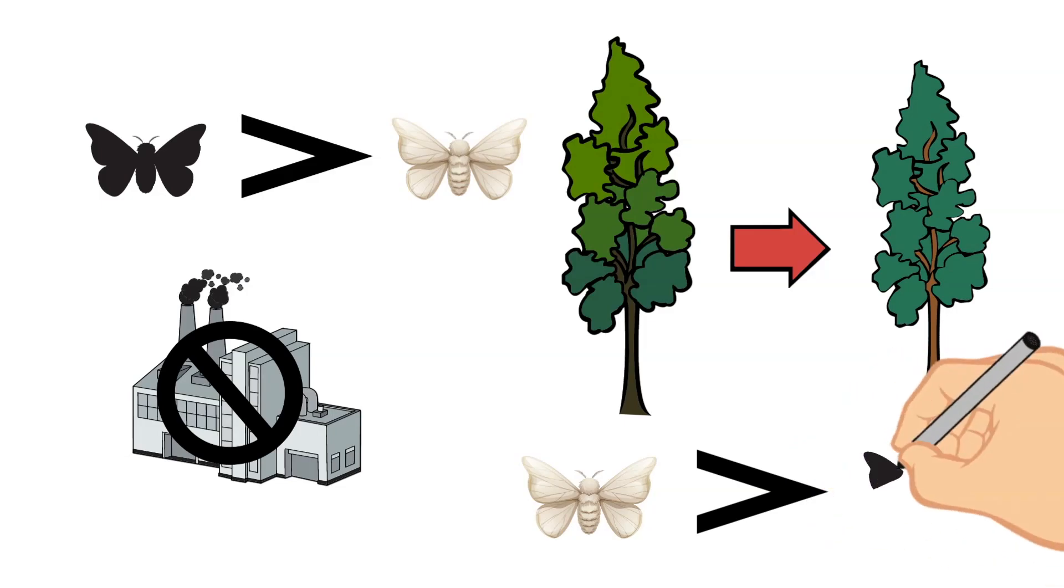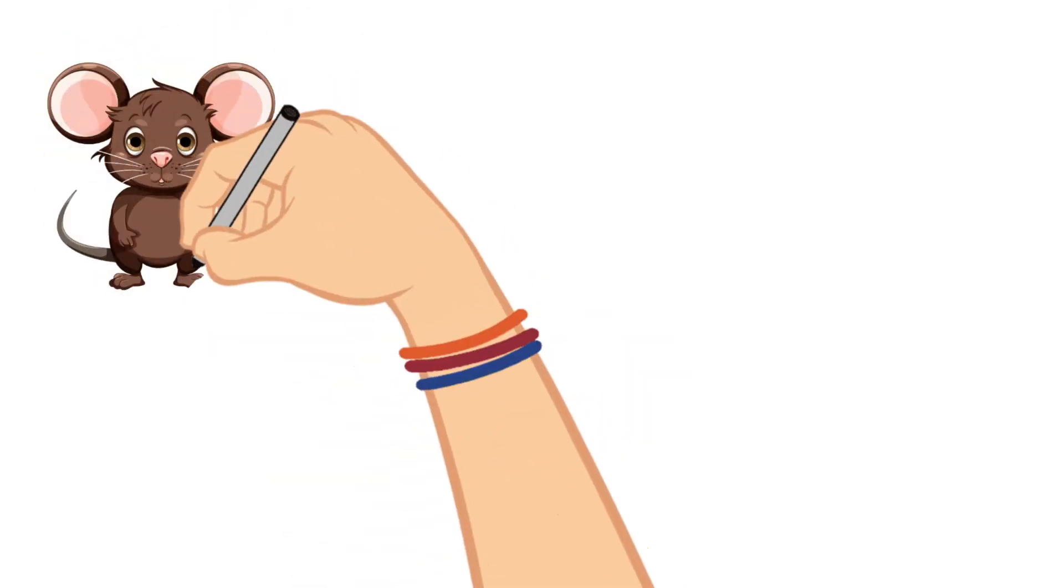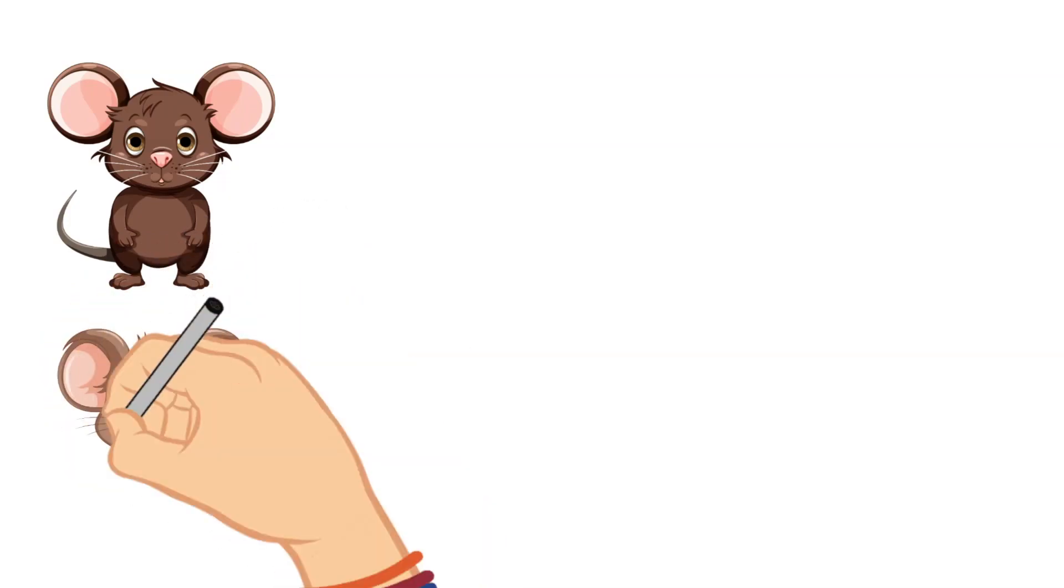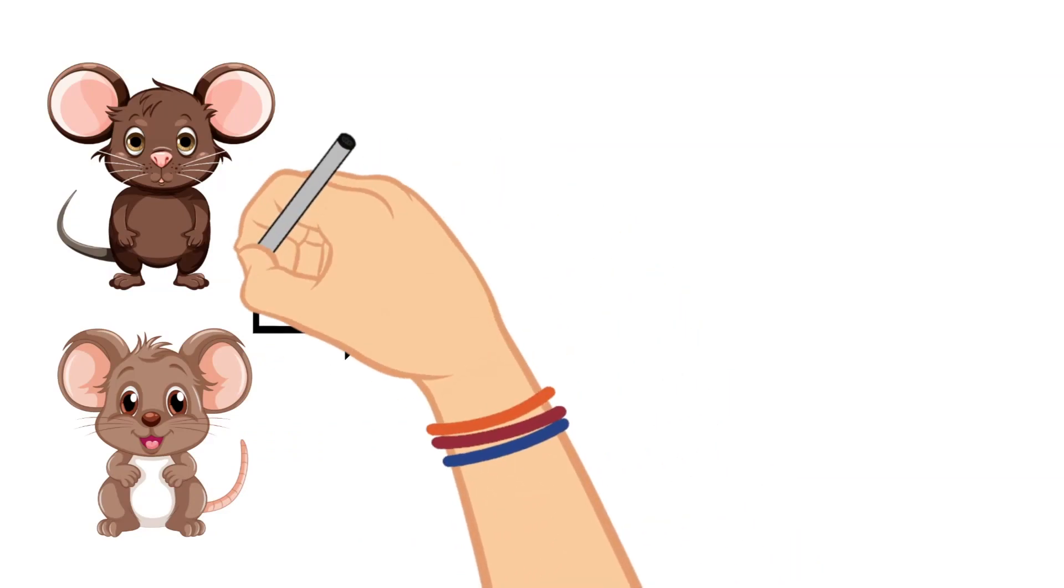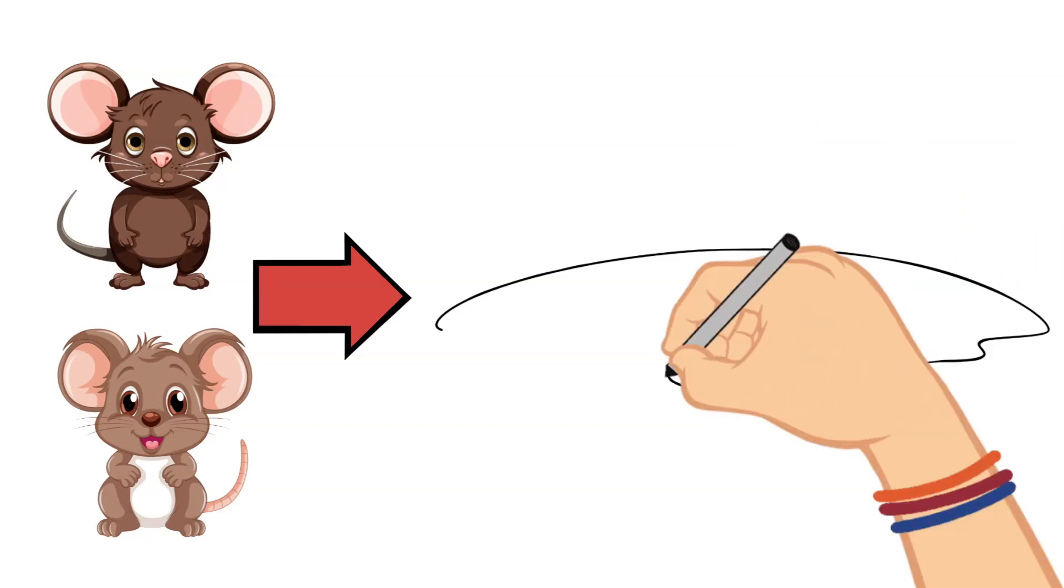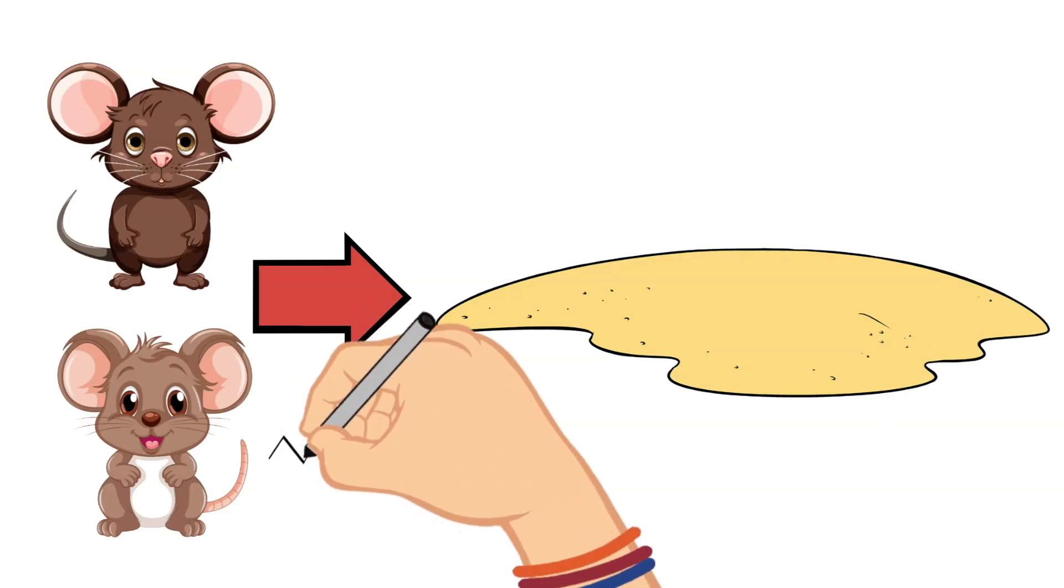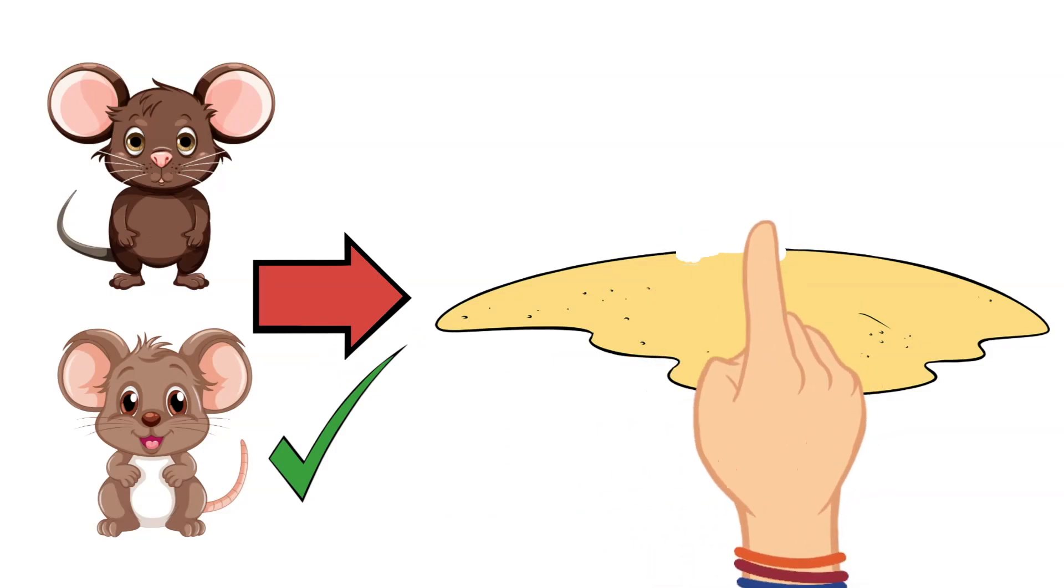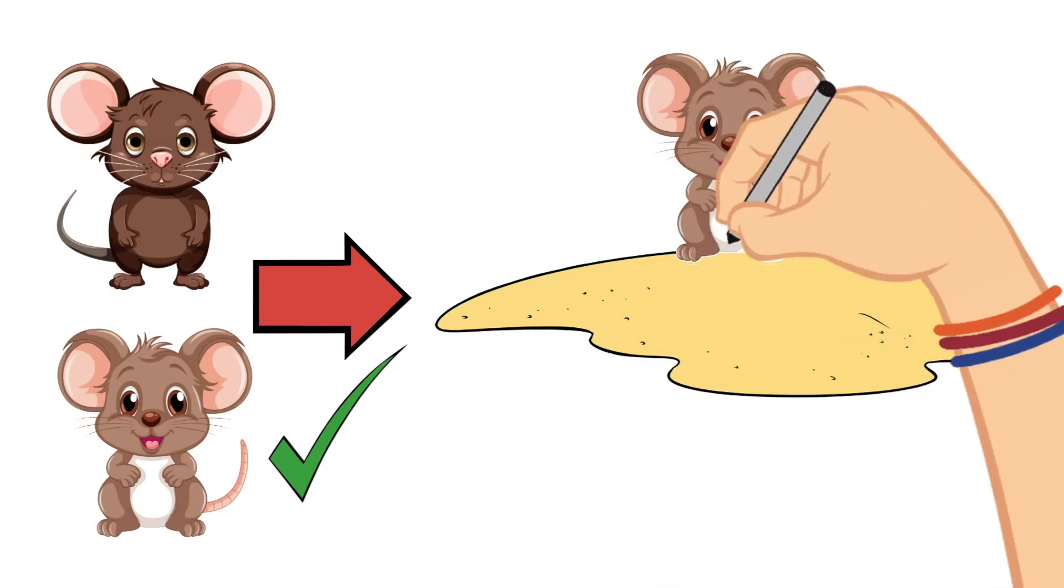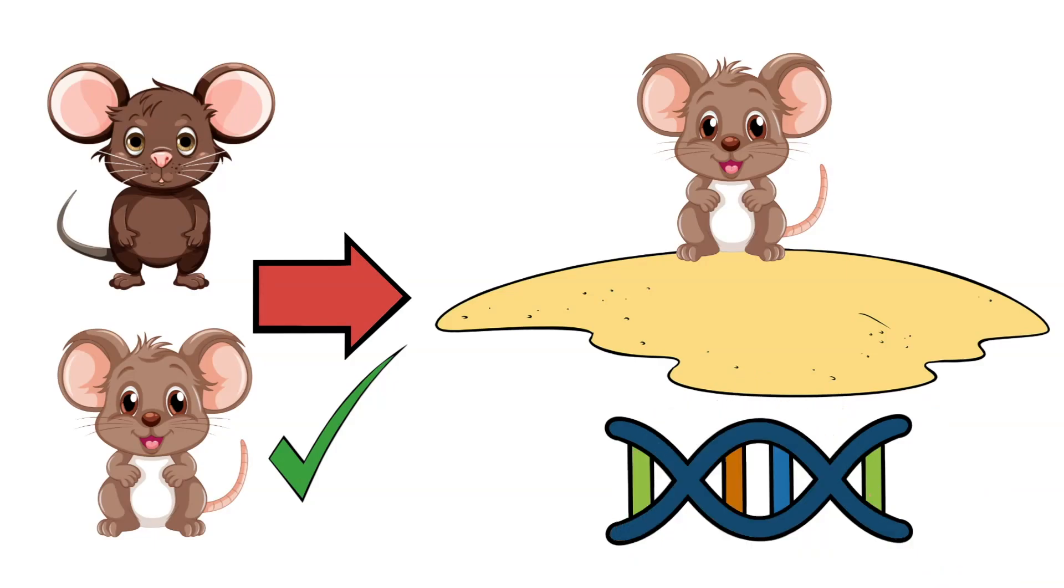Another example of natural selection are the deer mice of the Sandhills of Nebraska. Deer mice were typically a dark brown color but there were some that were light brown and when they migrated to the Sandhills, the dark brown deer mice did not do as well camouflaging themselves against the sand. So, the light brown deer mice succeeded better and lived longer which allowed them to reproduce. As a result, there was a genetic change in the deer mice of the Sandhills that favored the light brown colored fur.